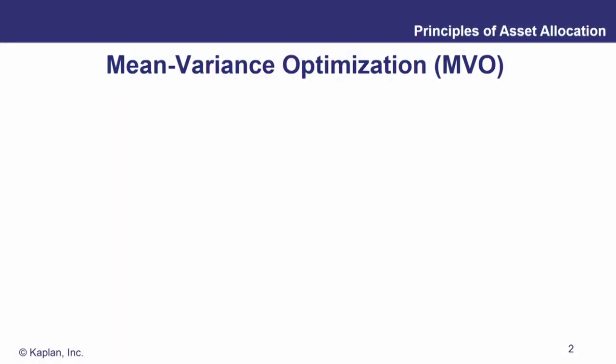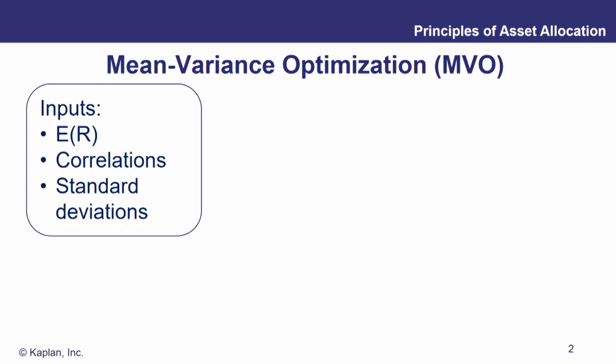Welcome back. Let's continue on Asset Allocation and Related Decisions in Portfolio Management — Principles of Asset Allocation. There's some nice review here. Let's start off by talking about mean variance optimization.